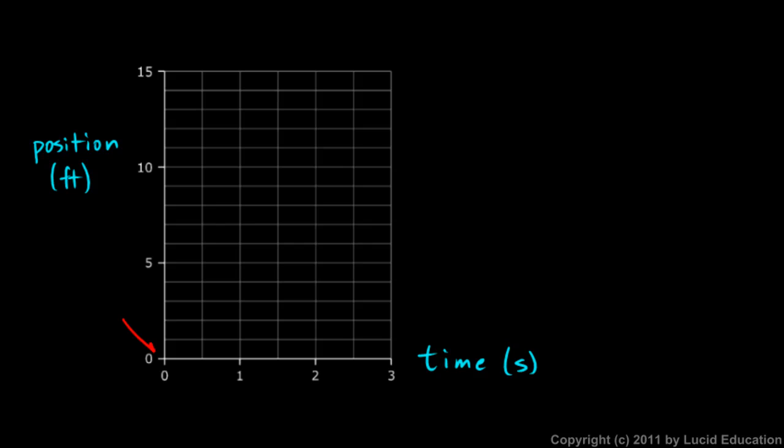And we're going to plot some points on this graph. First, you want to look right here. At time 0, it's at position 0. So I can draw that point in on the graph. And I know that at 1 second, it's at 4 feet because it's moving 4 feet per second. So I'm going to plot the point right here.